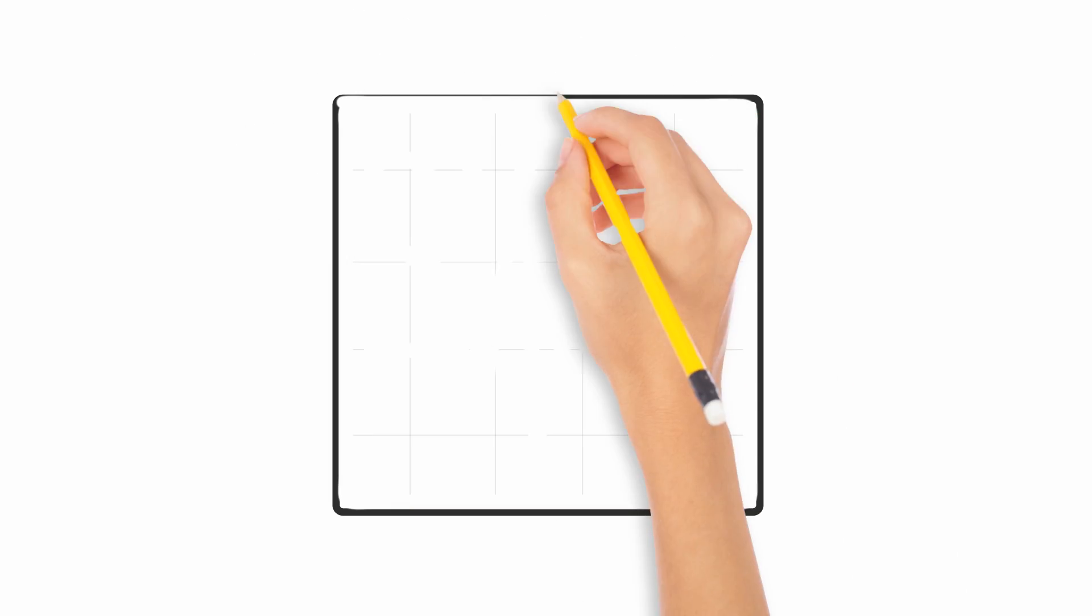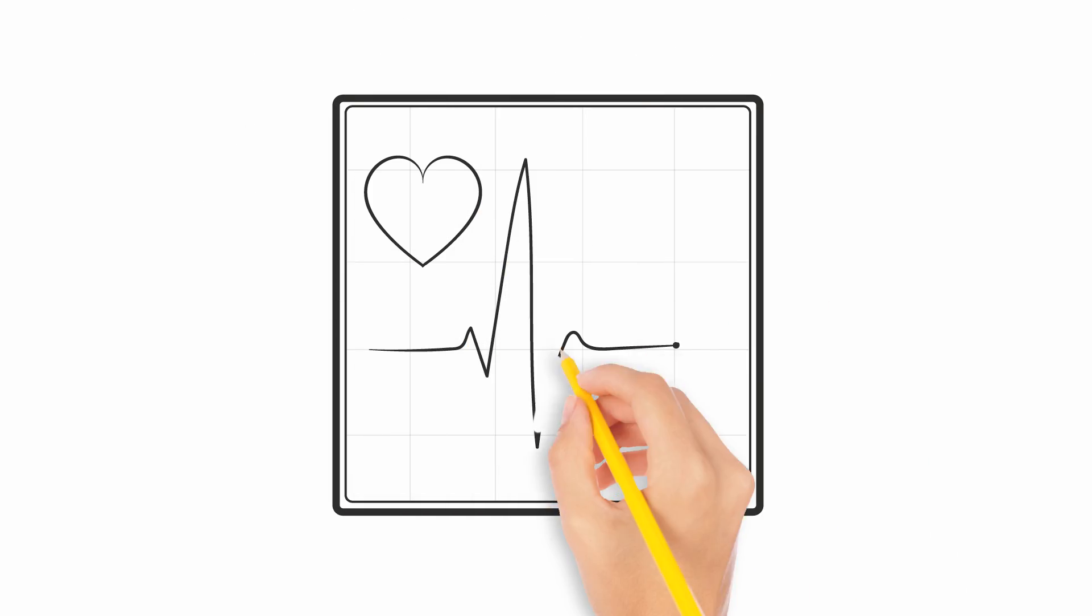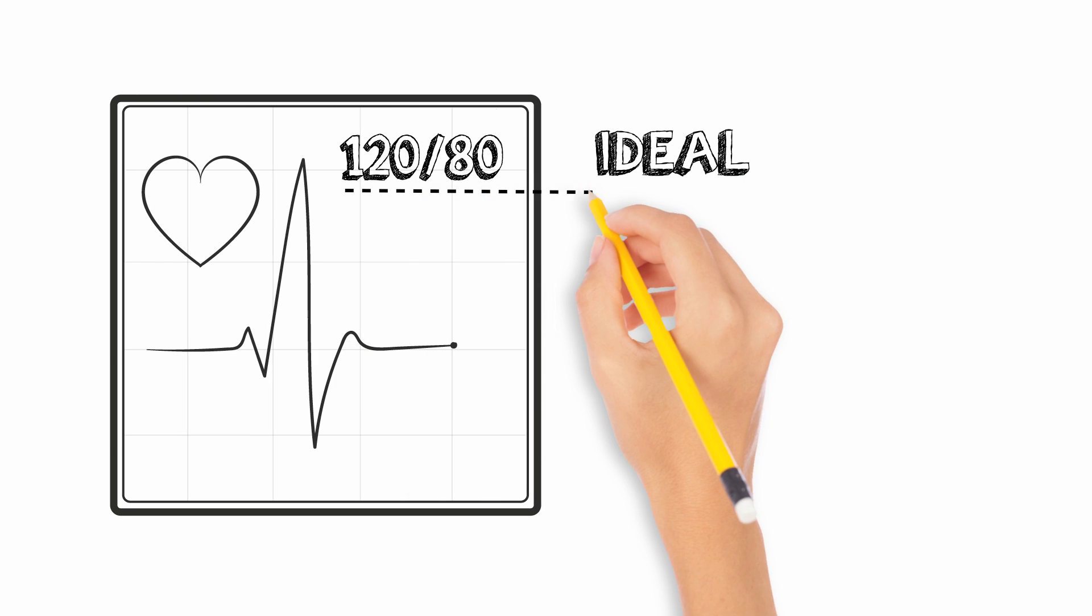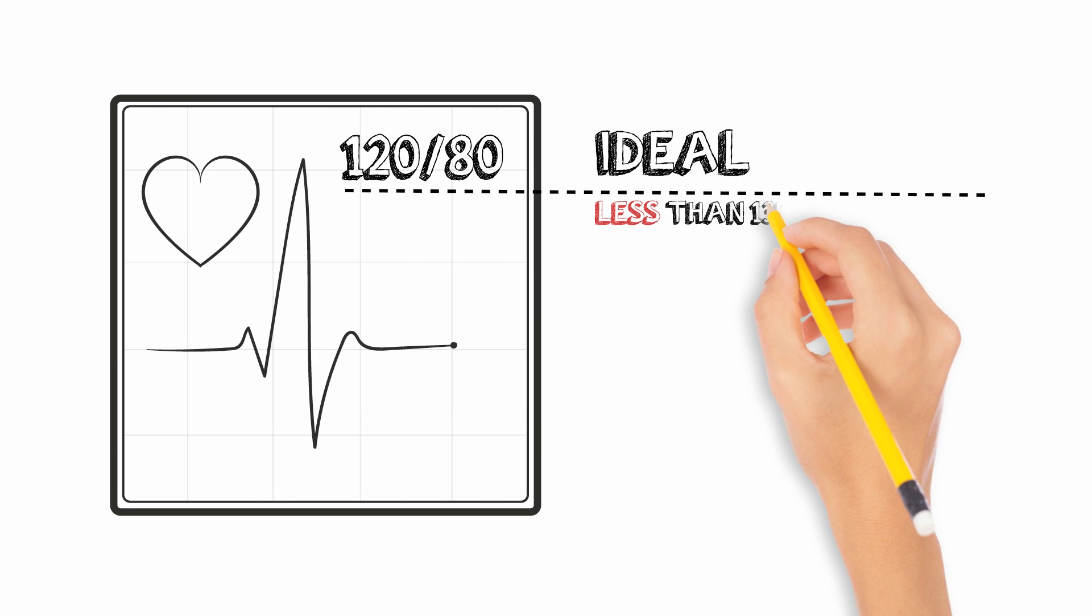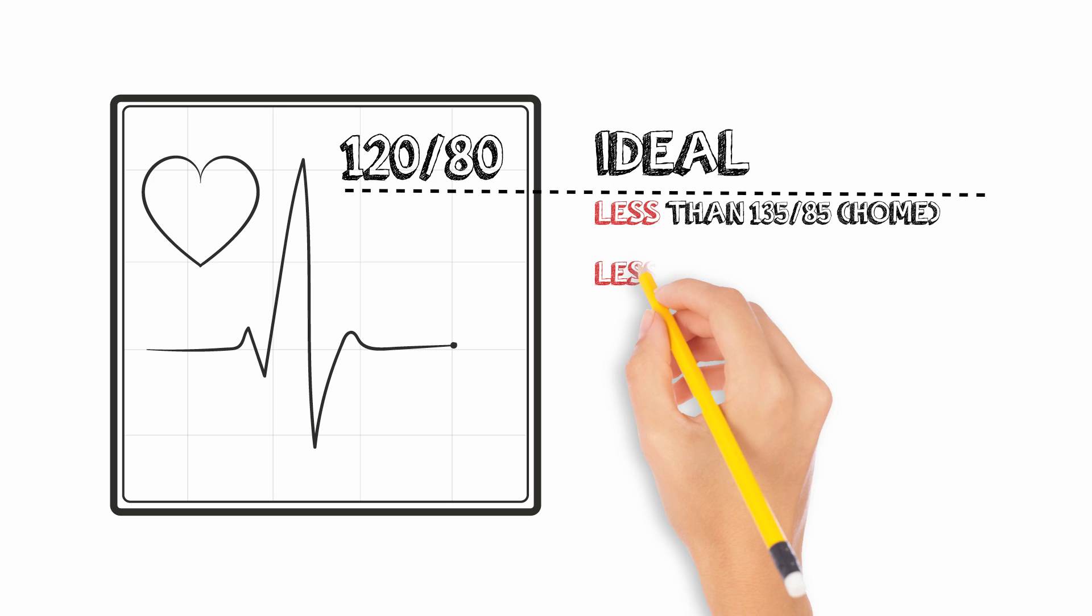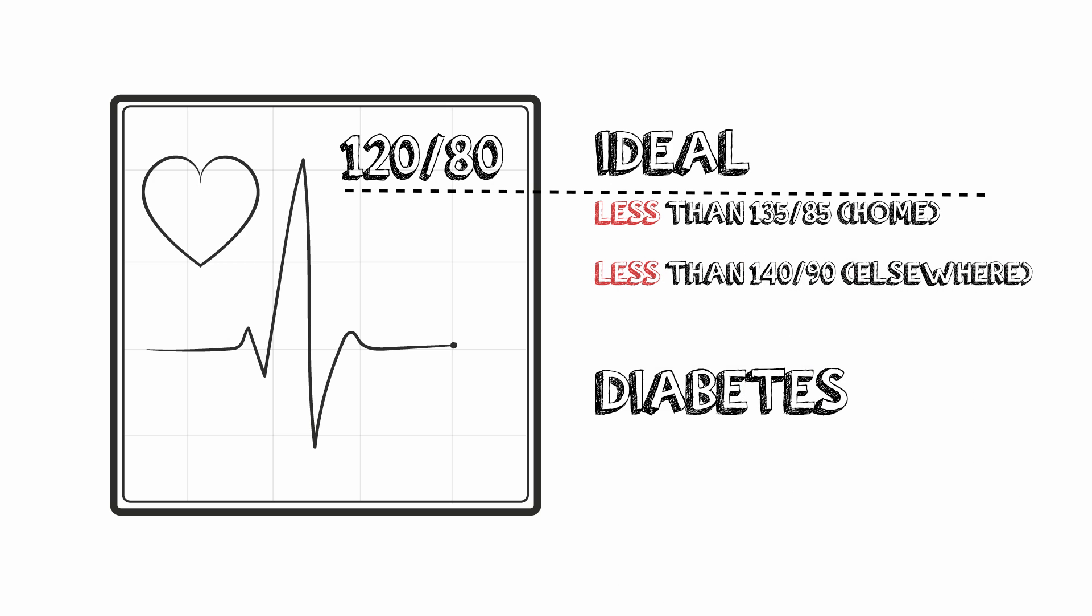Blood pressure is always best measured at rest. Ideal blood pressure is 120 over 80. Your blood pressure should be less than 135 over 85 in the comfort of your home and less than 140 over 90 elsewhere. If you suffer from diabetes your blood pressure should always be lower than 130 over 80.